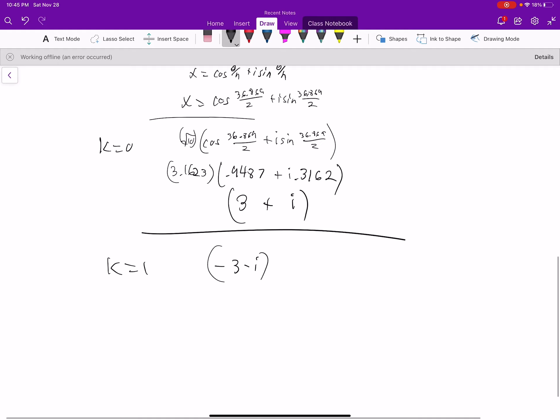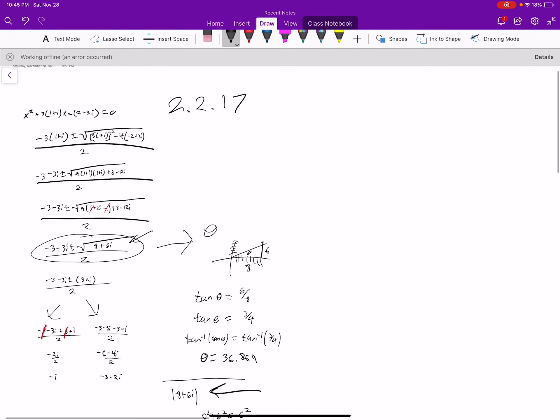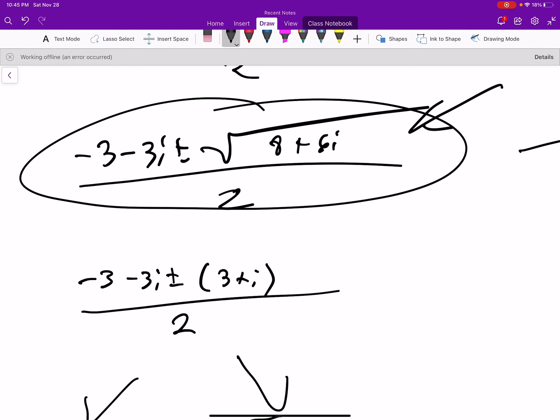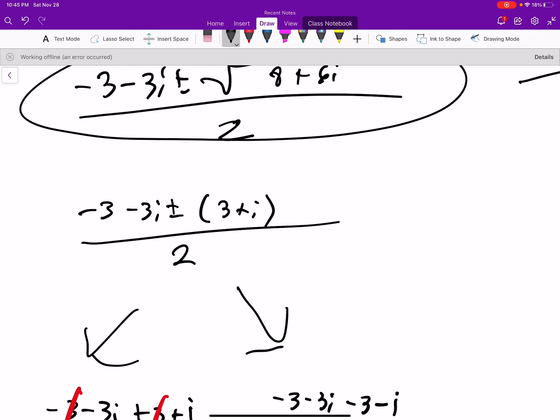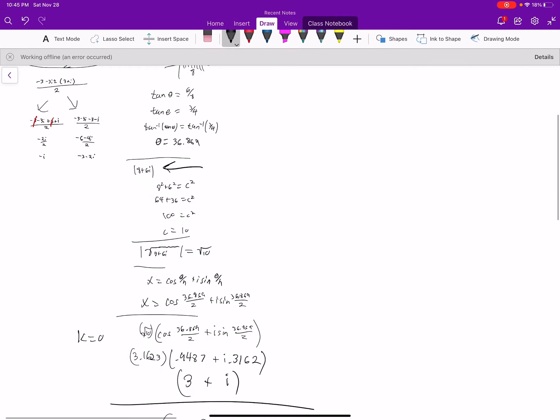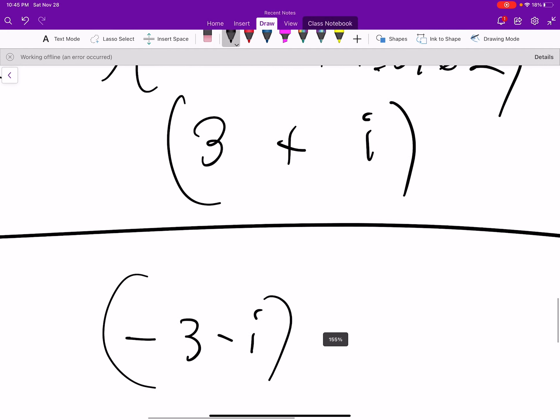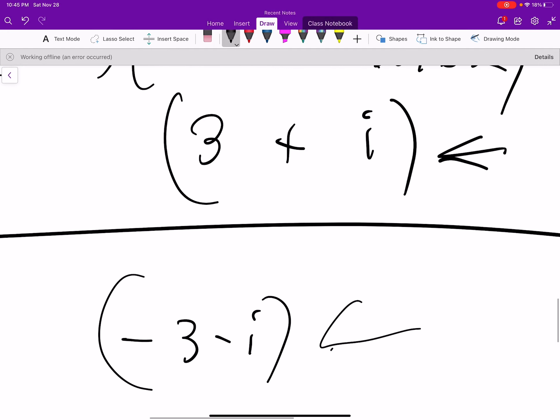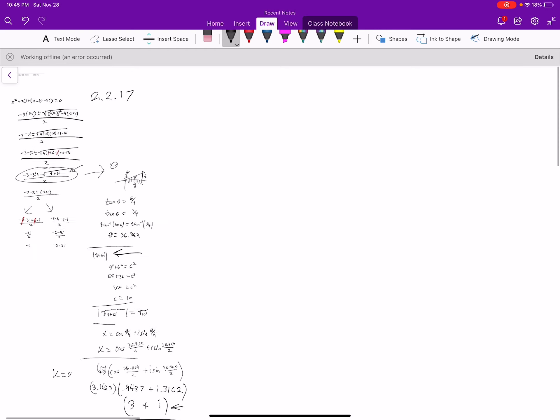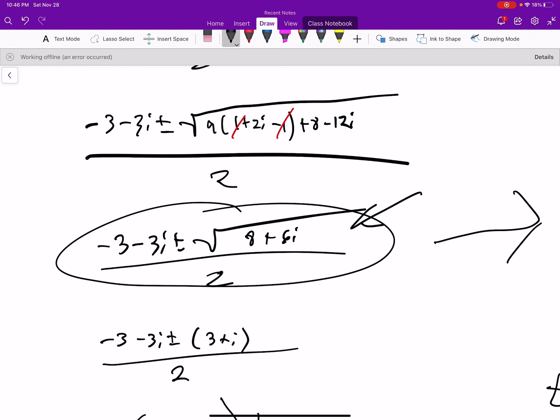So we get that and keep going here. So now we have 3 plus i, and instead of using the plus or minus separately, we can just use plus or minus 3 plus i. Because here we get a plus or minus, and then here we get another plus or minus from this.